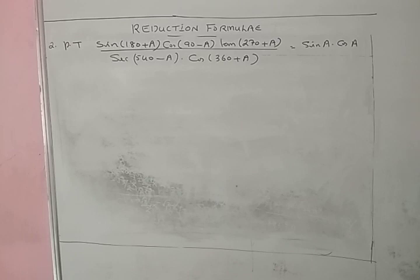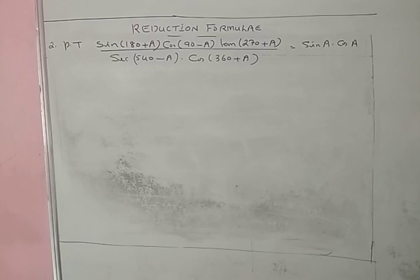And tan(270 + A) = minus cot A. And cos(360 + A): since 360 equals 0, cos(360 + A) = cos A. The remaining value to find is sec(540 - A).